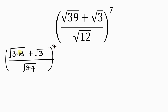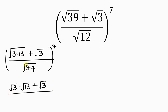Simplifying further, this expression becomes the square root of 3 times the square root of 13, plus the square root of 3, all over the denominator, which simplifies to the square root of 3 times the square root of 4, all raised to the 7.